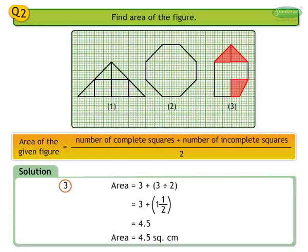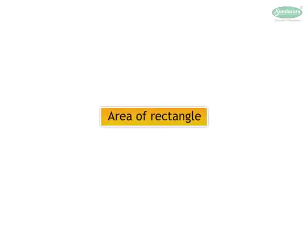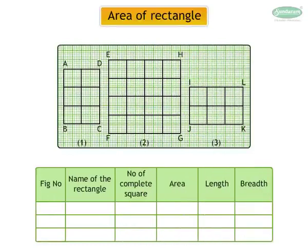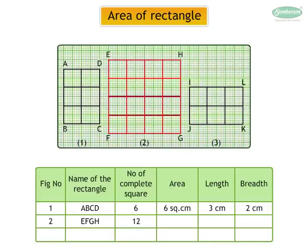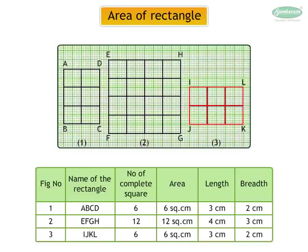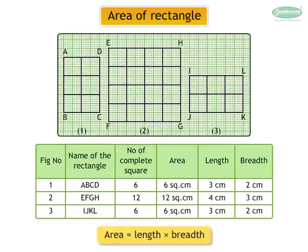Let's look at the area of a rectangle. From the figure we can fill the table and find the area of each rectangle. In rectangle EFGH, number of complete squares are 12, area is 12 square centimeters, length is 4 centimeters, and breadth is 3 centimeters. In rectangle IJKL, number of complete squares are 6, area is 6 square centimeters, length is 3 centimeters, and breadth is 2 centimeters.